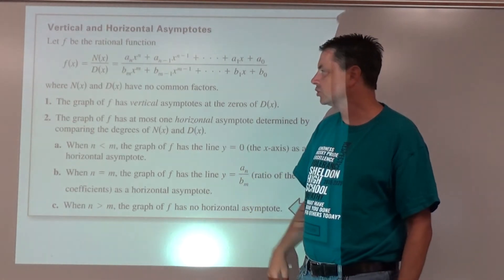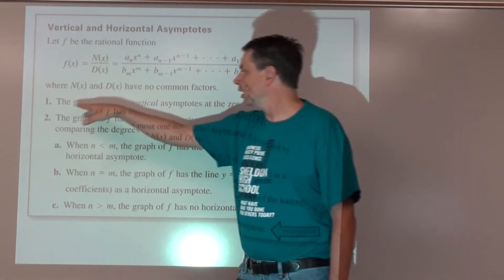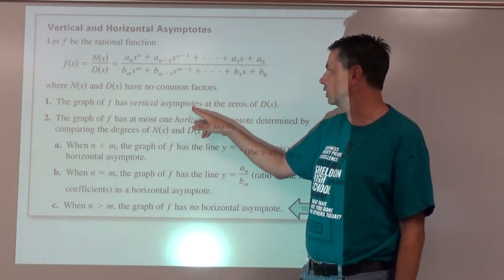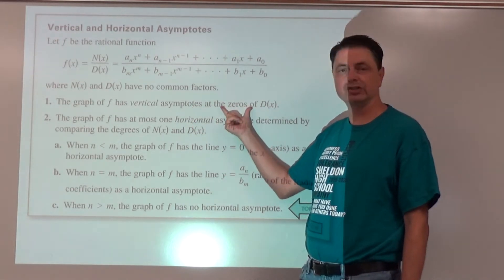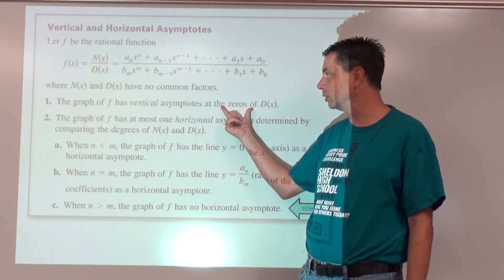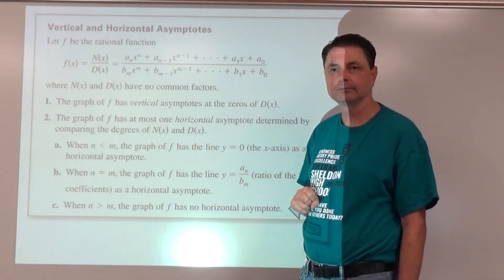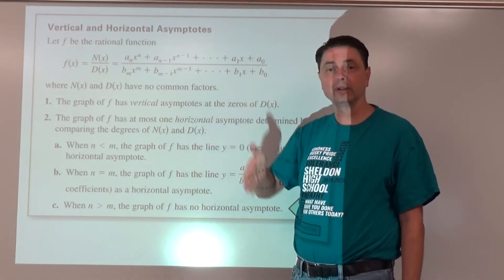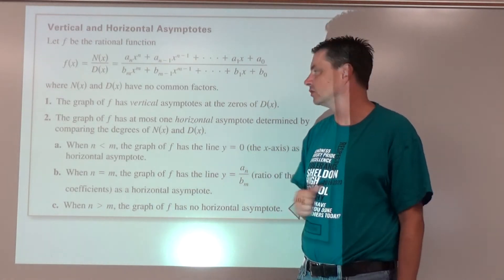Some important things to know: a rational function is going to have vertical asymptotes if the denominator function has any zeros. The zeros of the denominator — since we're not allowed to divide by zero — create places where there are gaps in the domain where we can't have x values.